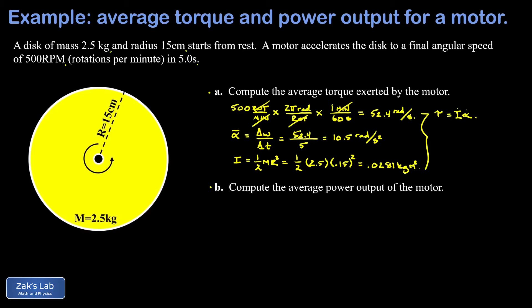And because we're talking about values that are averaged over a finite period of time, these are averages—average torque and average angular acceleration. And that average torque is just given by the moment of inertia, 0.0281, times our average angular acceleration, 10.5 radians per second squared.